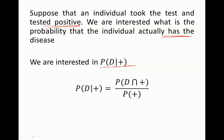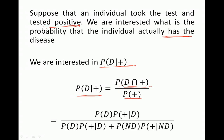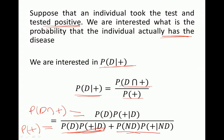Based on the conditional probability rule, that equals the probability of having the disease and having a positive test result in the numerator, divided by the probability of a positive test result. Using the multiplication rule, the probability of a positive result can be represented as a summation: probability of disease times probability of positive given disease, plus probability of no disease times probability of positive given no disease. So in the denominator we're summing over the outcomes for disease and no disease.